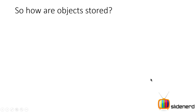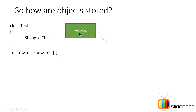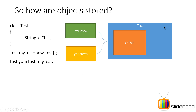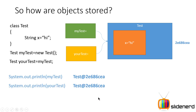So myTest does not contain the object — it refers to the object. Now let's talk about equality. When you say test myTest = new test(), there is the variable myTest and the actual object containing x = 'hi' stored somewhere. myTest is simply pointing to that place. Now when I say test yourTest = myTest, what I'm saying is: myTest contains address 2e686ce8, and yourTest should contain that same address — in other words, yourTest is going to point to that same object.